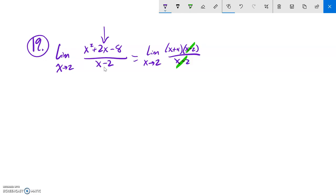Which that gets rid of my trouble spot. So this is equivalent to finding the limit as x approaches 2 of x plus 4. Now I can just substitute it in there. 2 plus 4 is 6.